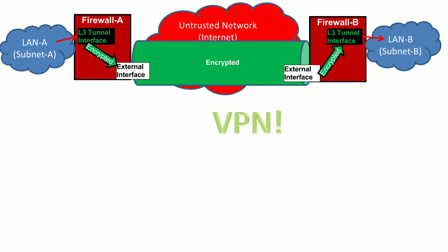There are certain parameters we need to configure to establish this VPN. These parameters work in two phases. In Phase 1, we establish the parameters for Internet Key Exchange, or IKE — also called IKE Security Associations. In Phase 1 we configure the parameters for IKE, and in Phase 2 we configure the parameters for IPsec Security Associations. We configure both phases on both firewalls. I will first discuss Firewall A, and these settings will be replicated on Firewall B.